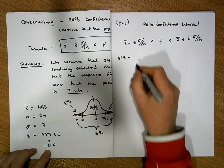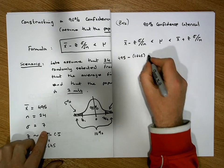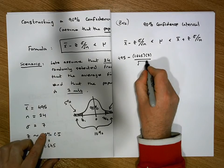z is 1.645 times sigma, which is 7, and that needs to be divided by the square root of n, which is the square root of 24.